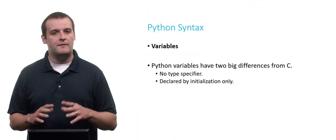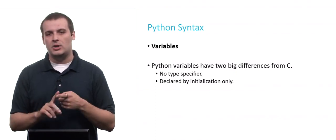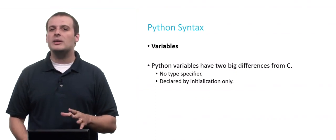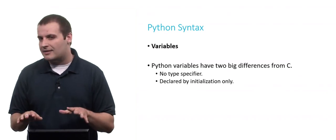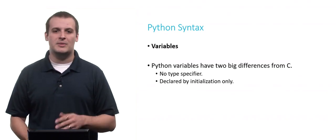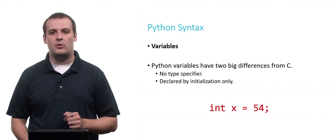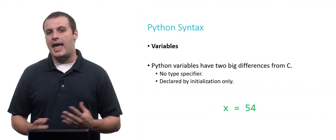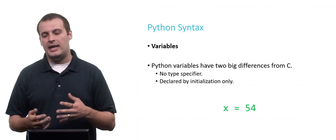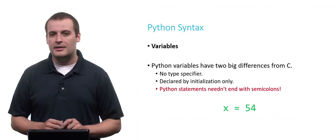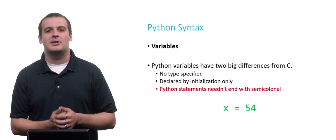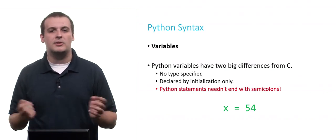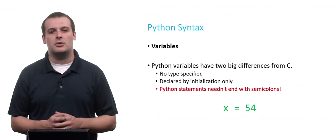Let's go through some basic things you can do in C and show how to do them in Python. Variables have two big differences from C: we don't have to specify a type anymore, and we can only declare them by initialization. In C we might say 'int x = 54;' — in Python, we just say 'x = 54'. Python statements don't need to end with a semicolon. You can include them, but you can also omit them to make your code look cleaner.